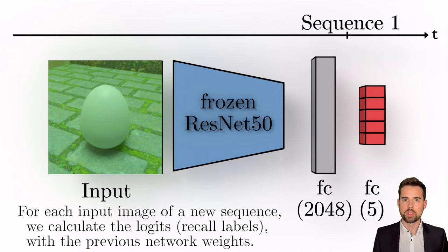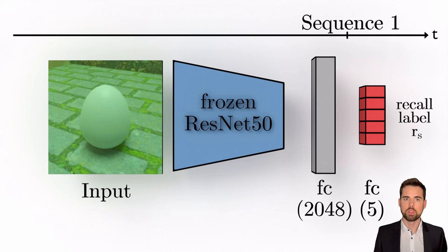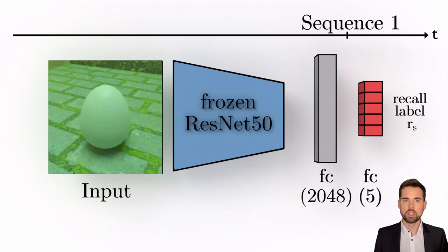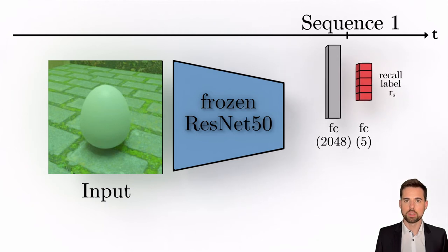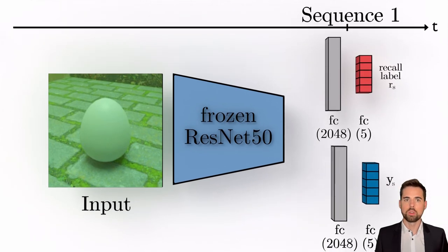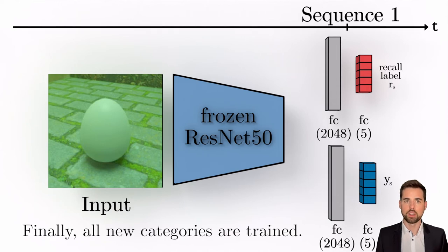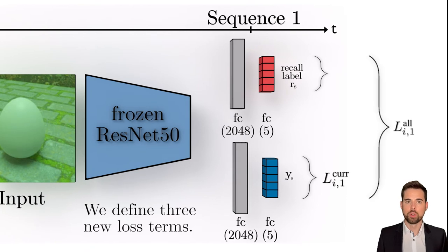Now, when a new sequence arrives, we take the previous network weights and calculate the logits for each input image of the current sequence. Those are then used as our recall labels for the training in order to avoid catastrophic forgetting.